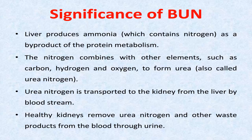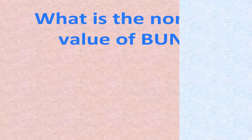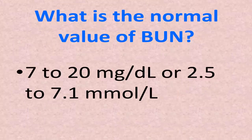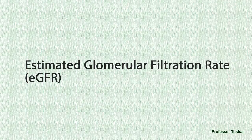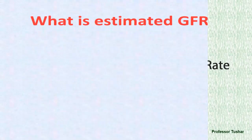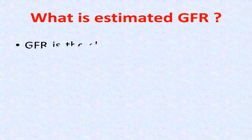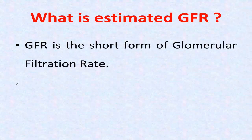The normal value of BUN is 7 to 20 milligrams per deciliter, or 2.5 to 7.1 millimoles per liter. Estimated glomerular filtration rate (eGFR): GFR is the short form of glomerular filtration rate.